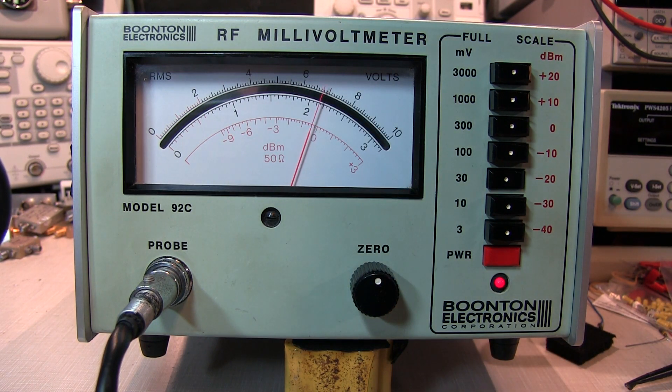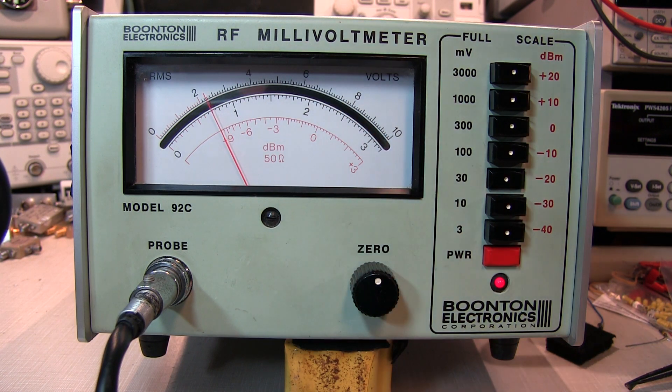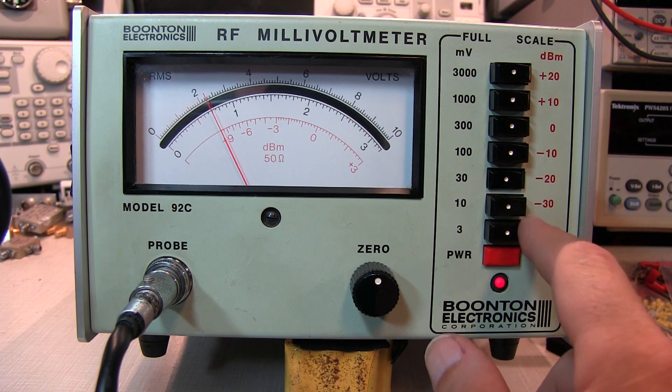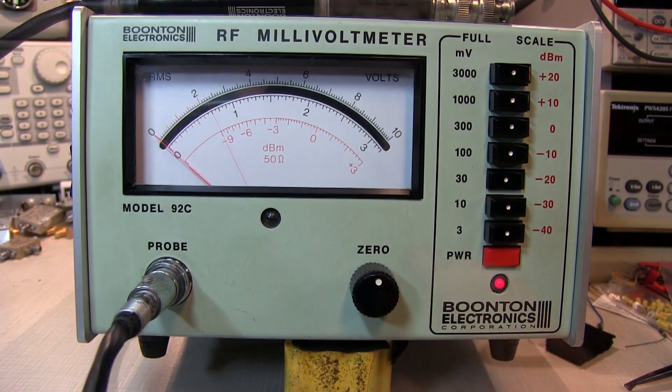And we'll go down another 10 dB. So there's minus 21, 22, 23, and I work my way down to minus 30 dBm. Now before I switch to minus 30, the lower two scales on this meter actually have a zero adjustment.